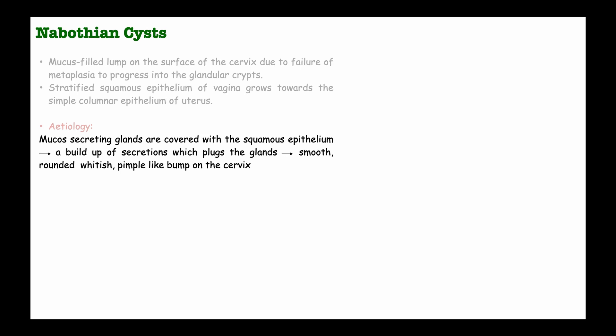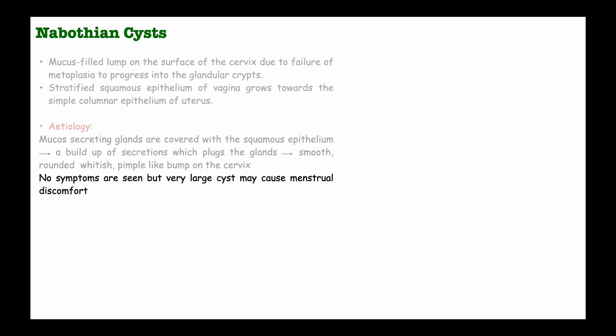In simple terms, a Nabothian cyst is formed in the Nabothian glands of the cervix. It is usually a normal finding in the transformation zone during routine pelvic examination. It is usually white to yellow in color with normal branching vessels. There are no symptoms associated with Nabothian cysts, but sometimes very large cysts may cause menstrual discomfort.